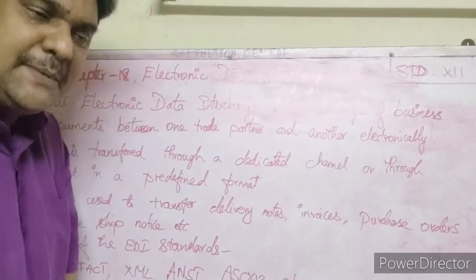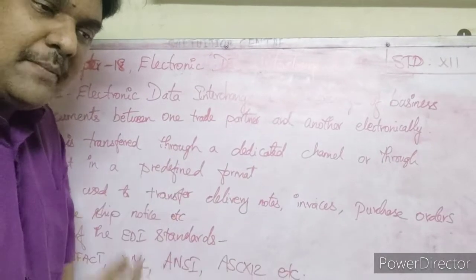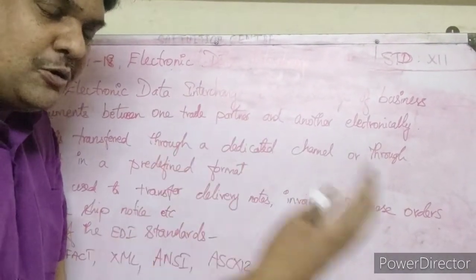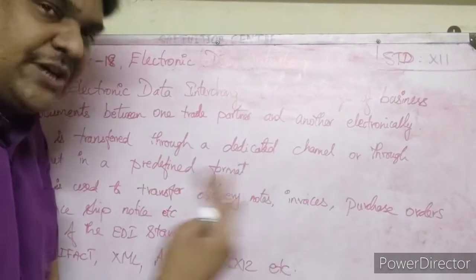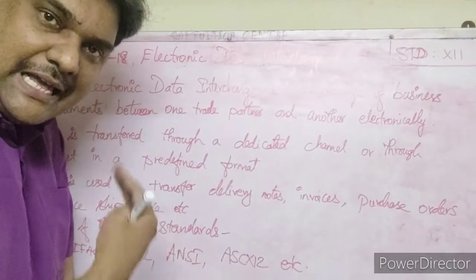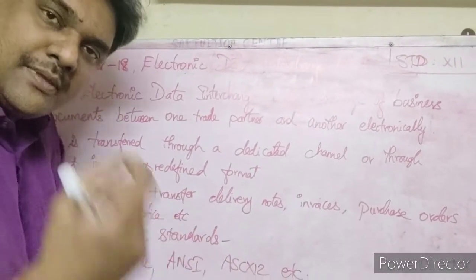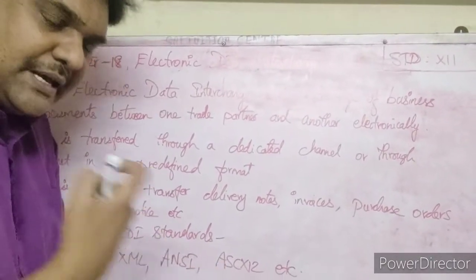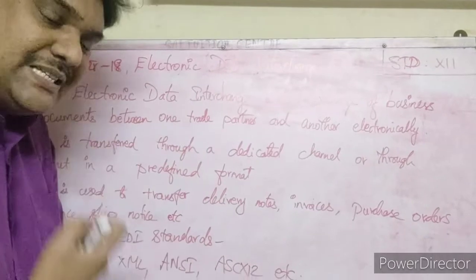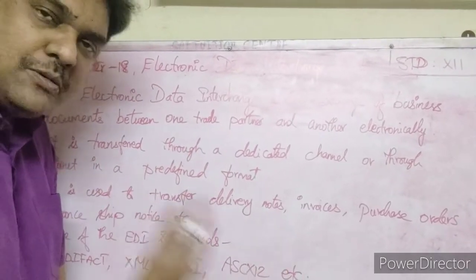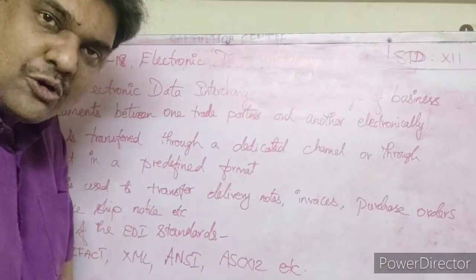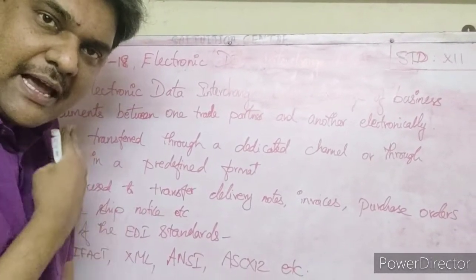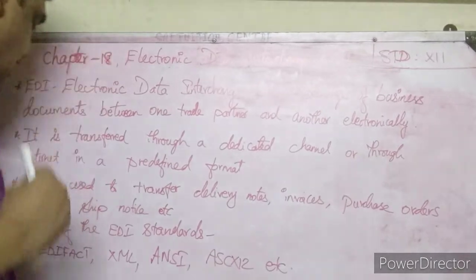In the business documents, computers and internet are used. One partner exchanges business documents with another via EDI. Instead of paper or physical documents, computers and internet connection are used to exchange business documents between partners — that is Electronic Data Interchange.